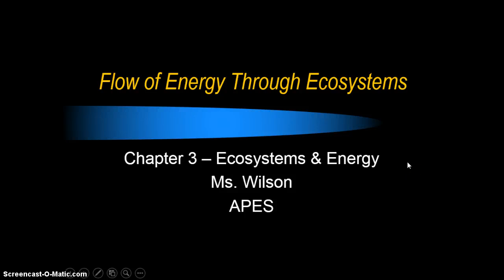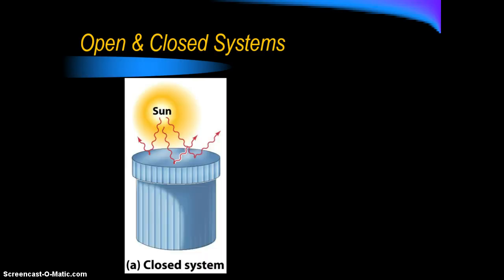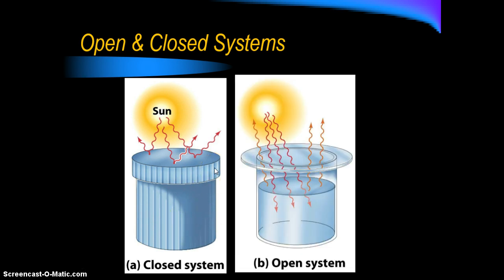Today we're going to be talking about the flow of energy through ecosystems, which goes along with chapter three: ecosystems and energy. Let's remember the difference between an open and closed system. In a closed system, nothing can get in and nothing can get out — this is what matter does; it cycles around in Earth like a closed system. But Earth is also like an open system where energy can come in and energy can go out.